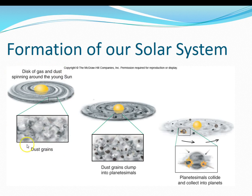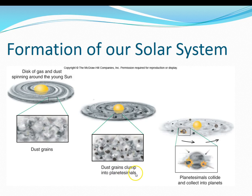Let's look at this visually. Here we have the disk of gas and dust spinning around a proto-Sun, a very young Sun. Because of gravity, the small pieces of dust started to stick together. Eventually these formed into small planets called planetesimals, and then planetesimals began to collide to form our planets that we have today in our solar system.